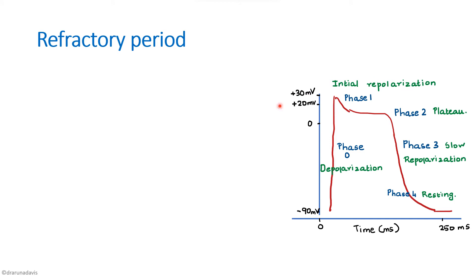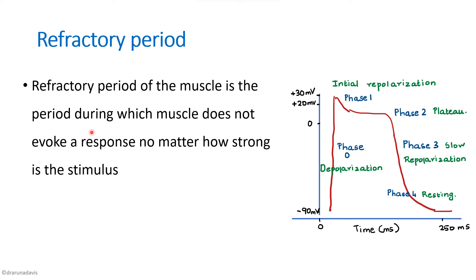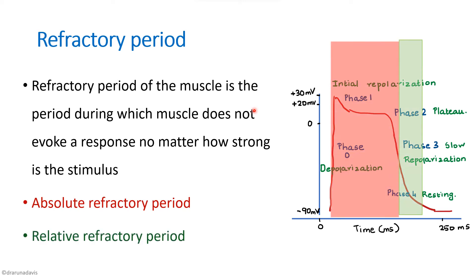The refractory period of a muscle is a period during which the muscle does not evoke a response no matter how strong the stimulus is. There are two types: absolute refractory period and relative refractory period. Almost most of the duration of this action potential falls under the refractory period. The ionic basis of the absolute refractory period is inactivation of sodium channels.